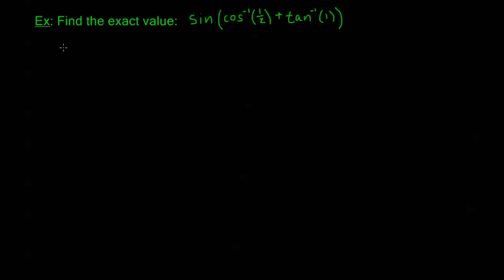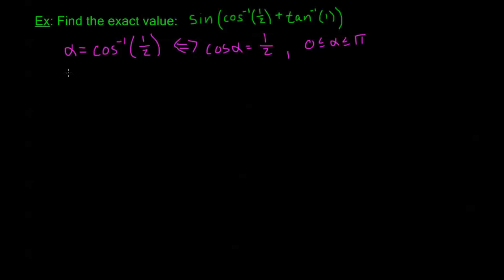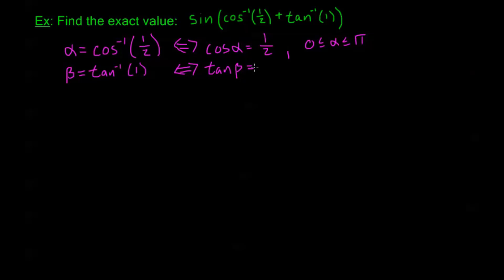I need to make substitutions first. Let alpha equal cosine inverse of one half, which gives us cosine of alpha equals one half, and alpha is between zero and pi. Let beta equal tangent inverse of one, which gives us tangent of beta equals one, and beta is strictly between negative pi over 2 and pi over 2.